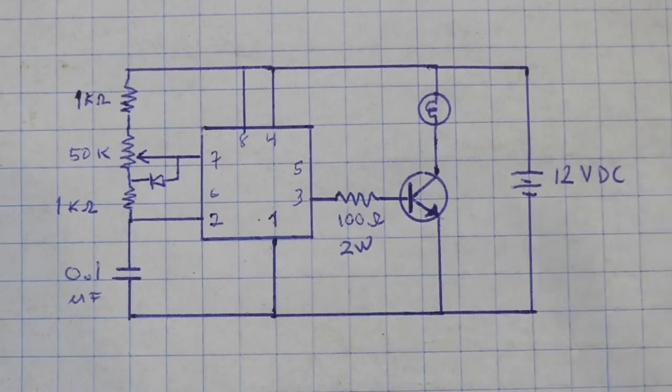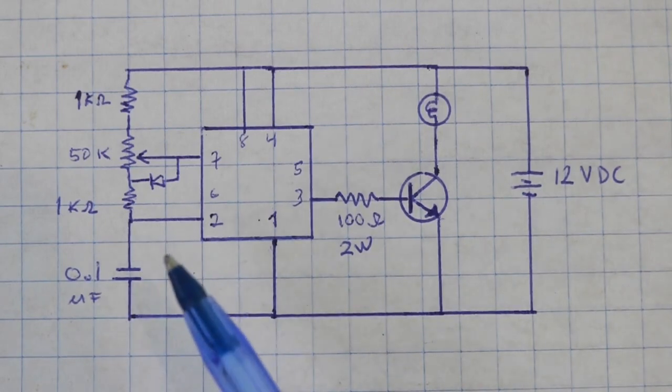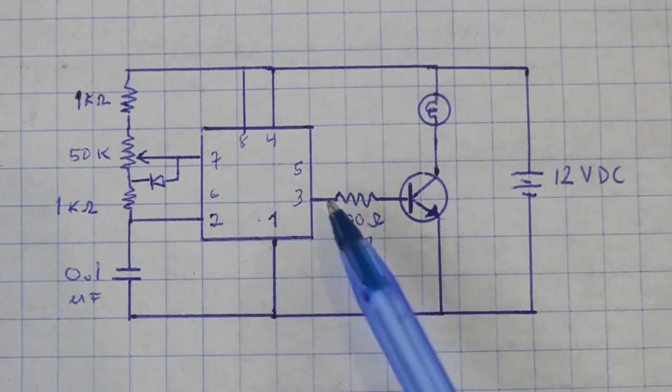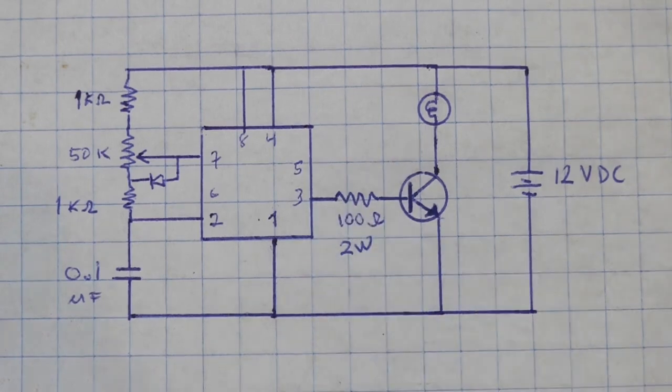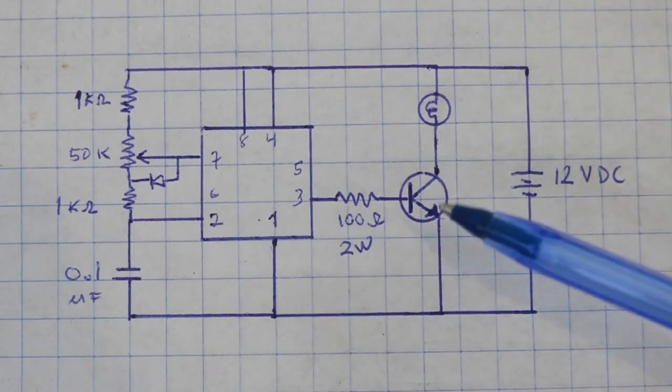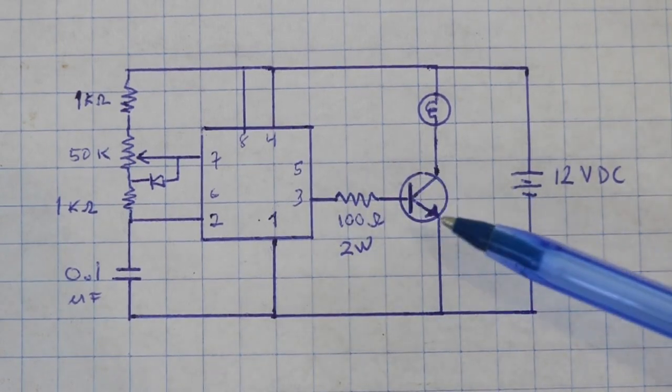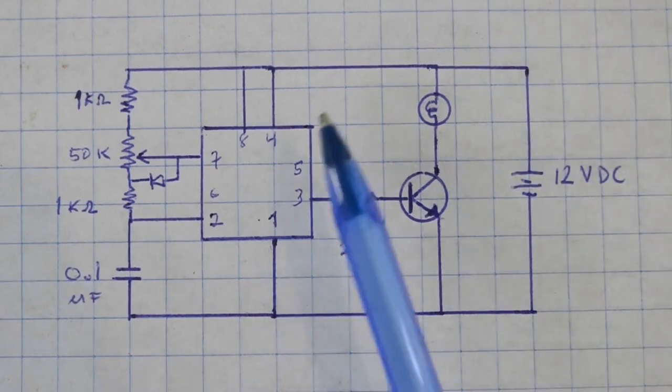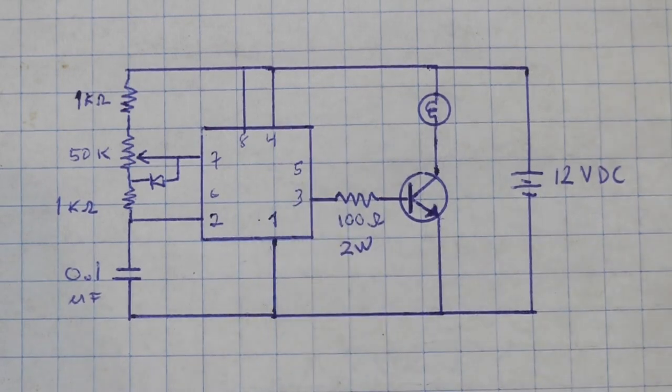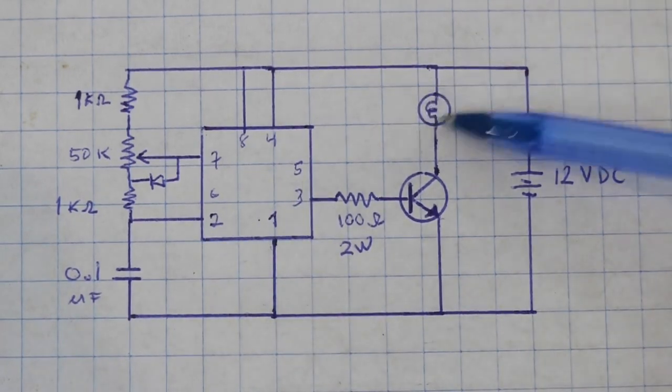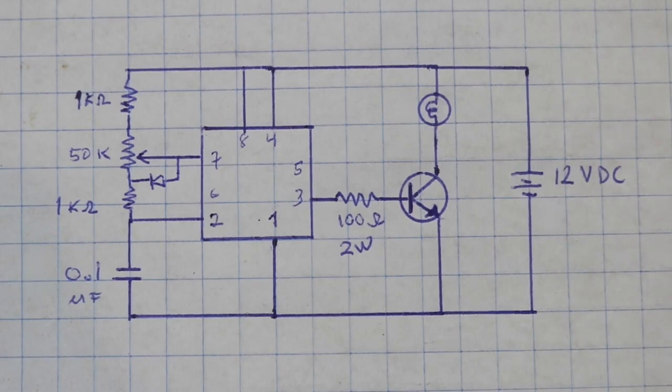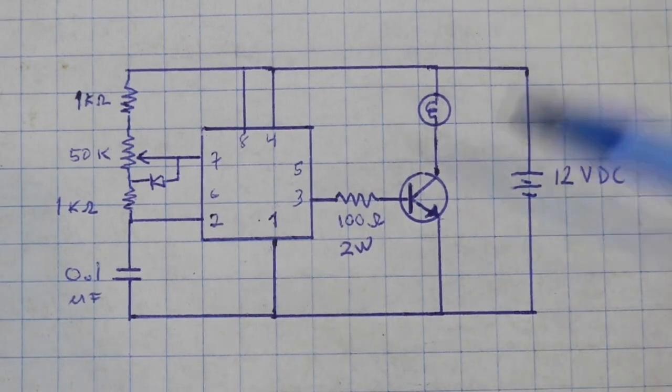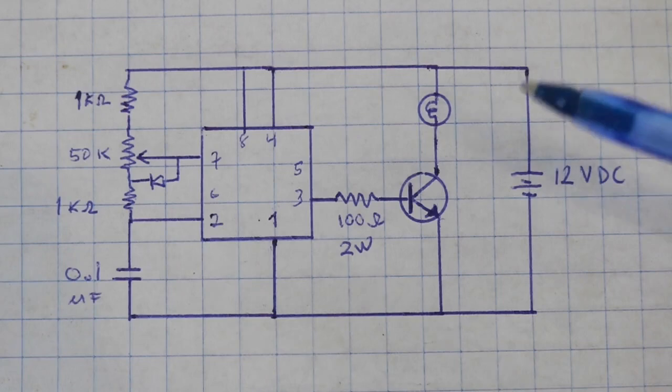So as we told before, the output at pin 3 is a train of pulses and this is applied to the base of the power transistor. We need a transistor because the maximum current that the 555 can handle is only 200mA and the lamp can draw around 1A. Therefore we need a power transistor for this circuit.